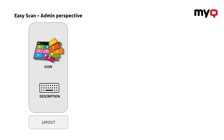Let's say we are now setting a new Easy Scan button. The first thing you would do is set the layout, so which icon it should use, and you will provide a description so the user knows exactly what he's doing — for example, scanning to an email.